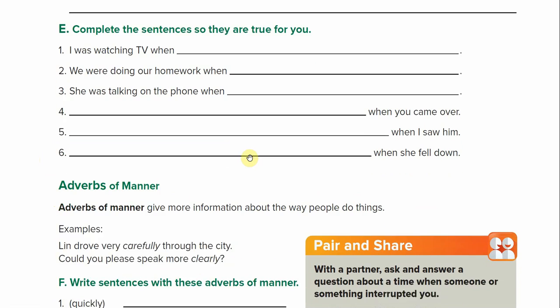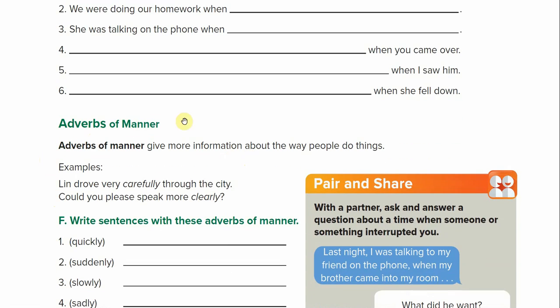Now we are going to the last section: adverbs of manner. Adverbs of manner give more information about the way people do things. Examples: Ben drove very carefully through the city. Could you please speak more clearly? An adverb of manner answers the question how — how was the verb done? How is the verb being done?